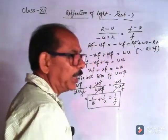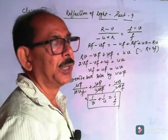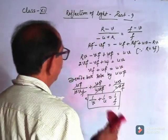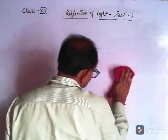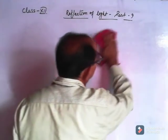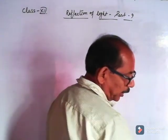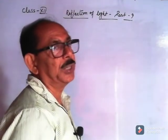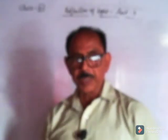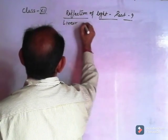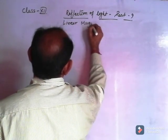आपको समझ में आ गया? सबसे बड़ी चीज़ है इसमें — figure को सही तरीके से draw करना, और selection of the pair of right-angle triangles. If you draw the figure correctly, it is very easy to derive this equation.